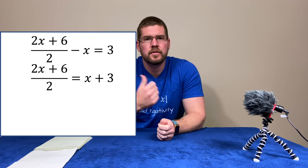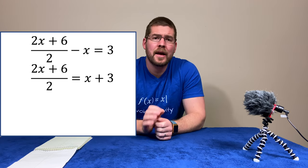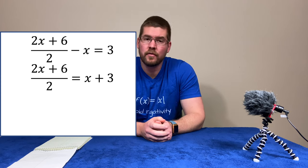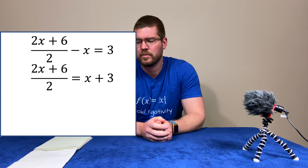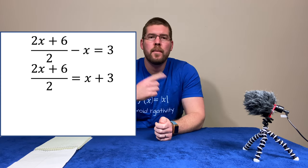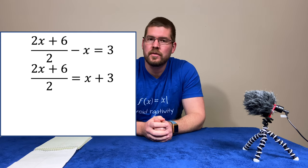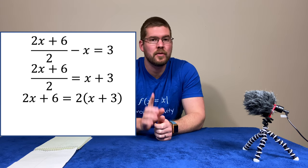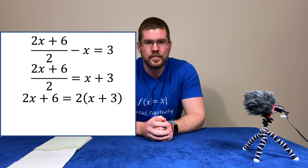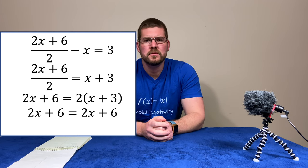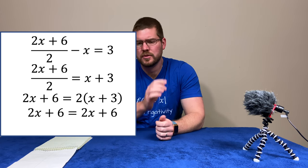I'm going to add an x to both sides there. When we add an x to both sides, we're left with 2x plus 6 divided by 2 equals x plus 3. Now, when I multiply both sides by 2, make sure you multiply to both parts on the right-hand side there. You're left with 2x plus 6 equals 2x plus 6.